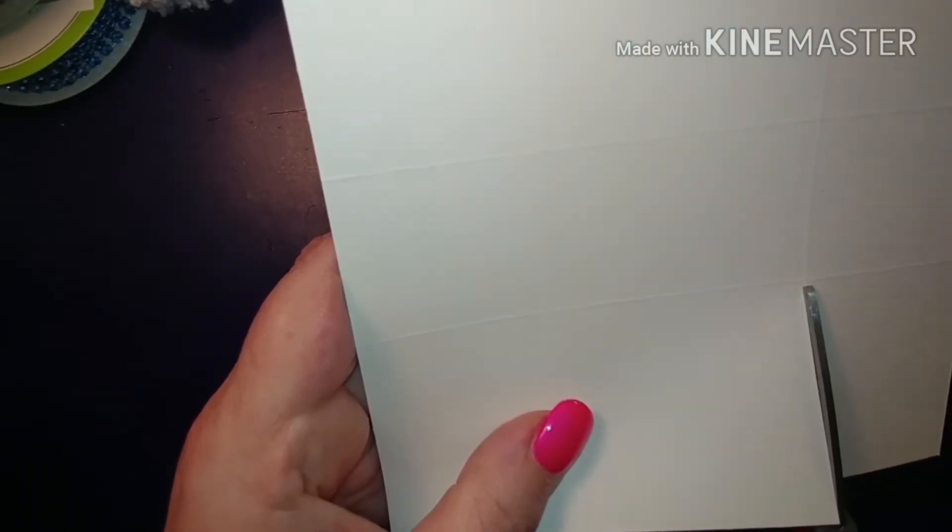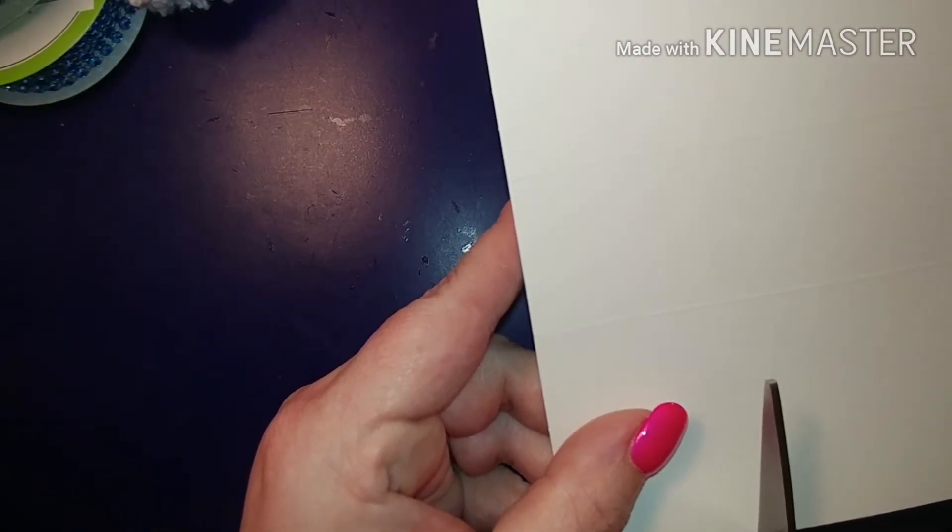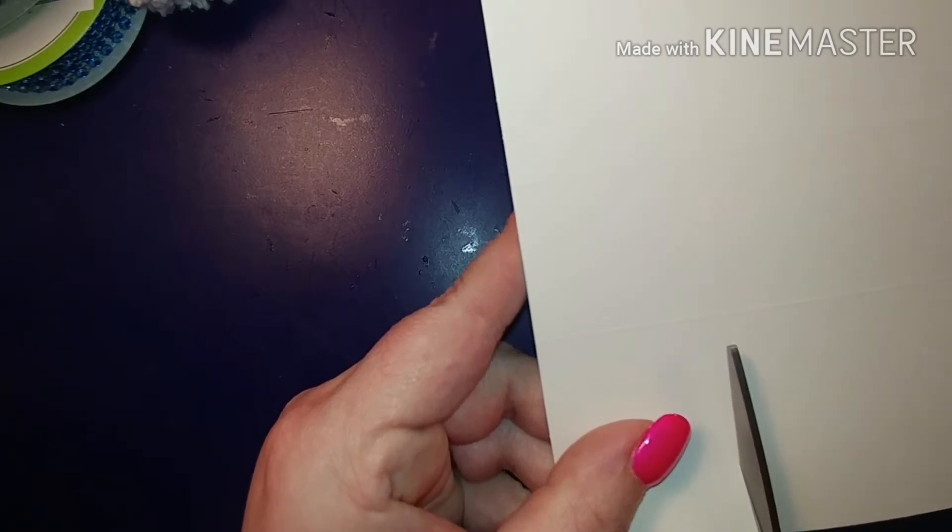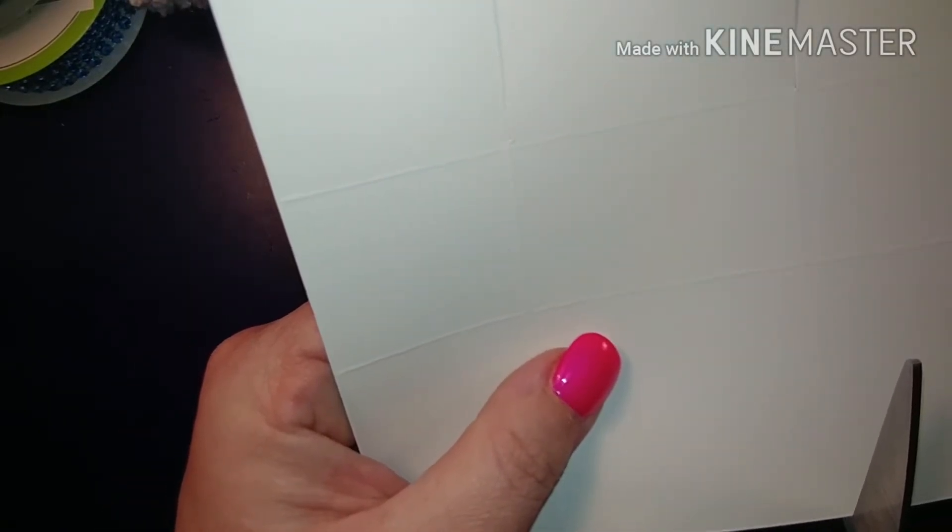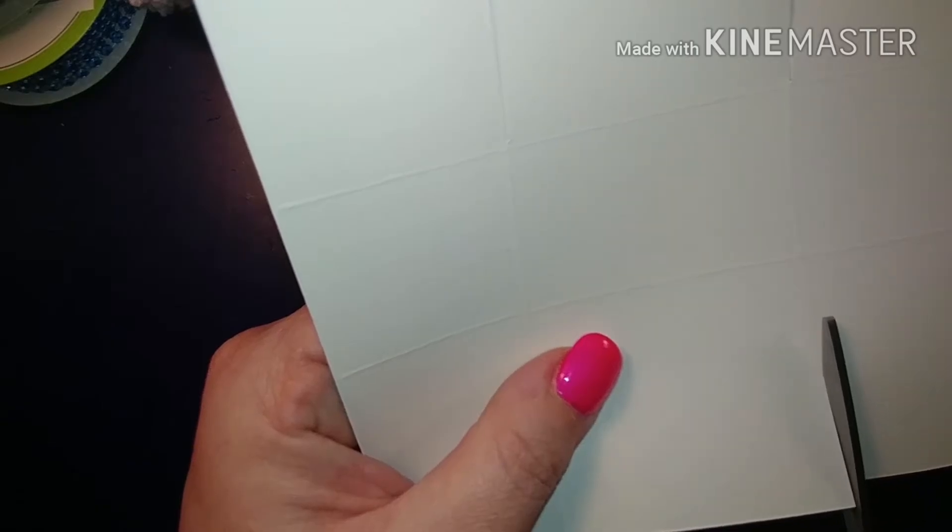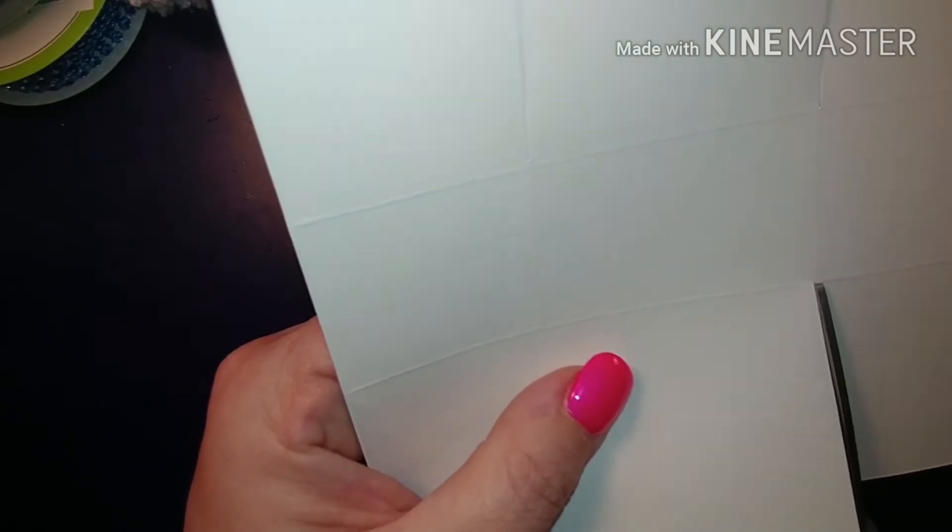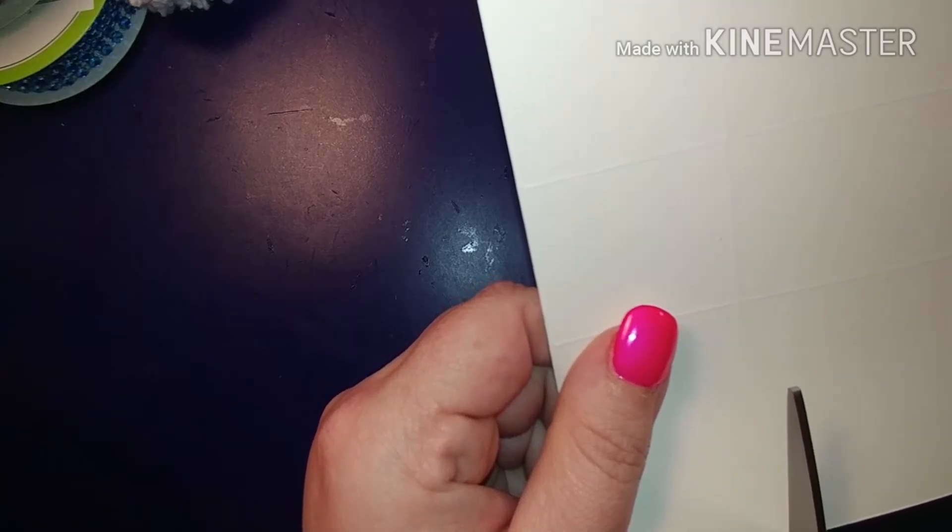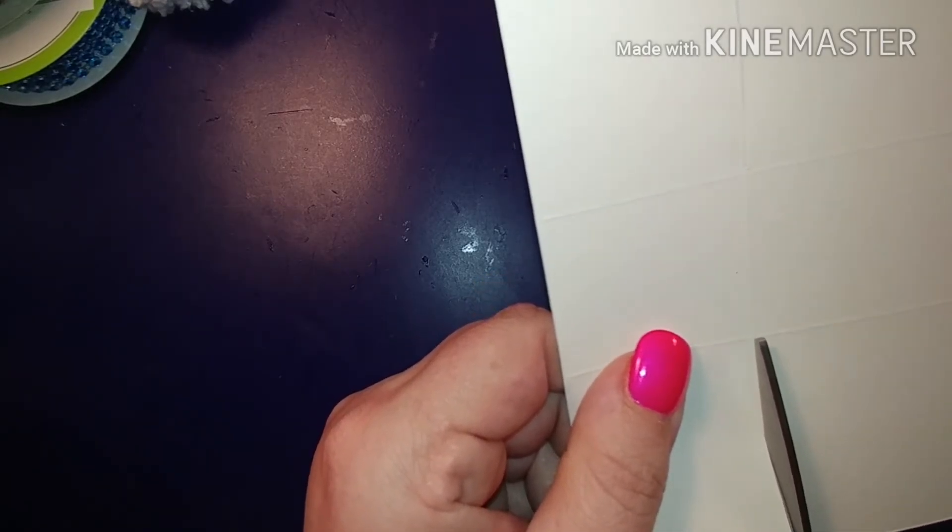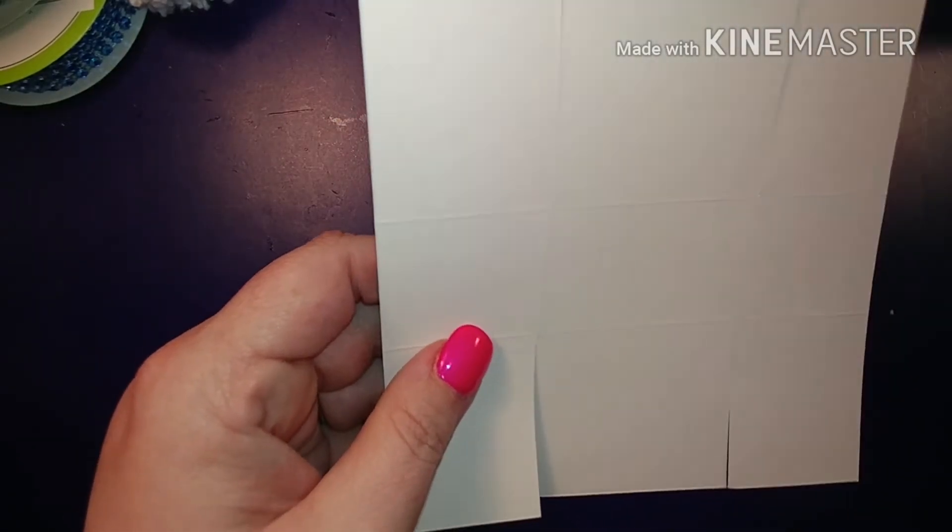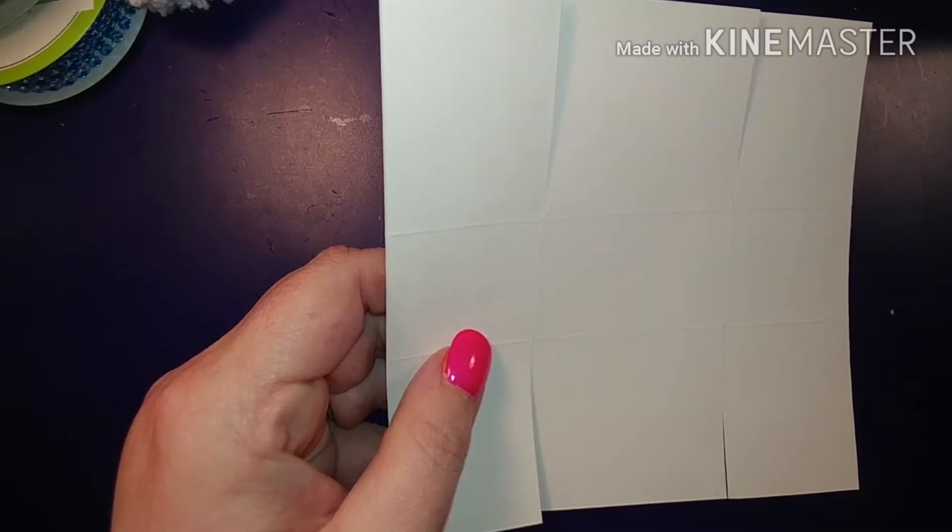Just follow your score line. Turn it around and do the same thing on the other side. I'm shaking, I think I've had too much coffee this morning. And that's all you need to do for the cutting.